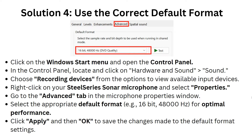For the correct default format, click on the Windows Start menu and open the Control Panel. In the Control Panel, locate and click on Hardware and Sound, then Sound. Choose Recording devices, right-click on your SteelSeries Sonar microphone, select Properties, and go to the Advanced tab. Set the default format to 16-bit, 48000 Hz for optimal performance. Click Apply then OK to save the changes.